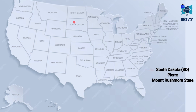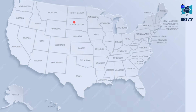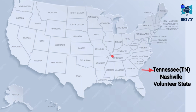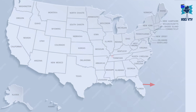Next state is South Dakota, its abbreviation is SD, its capital is Pierre, its time zone is CST, and its nickname is Mount Rushmore State. Next state is Tennessee, its abbreviation is TN, its capital is Nashville, its time zone is EST, and its nickname is Volunteer State.